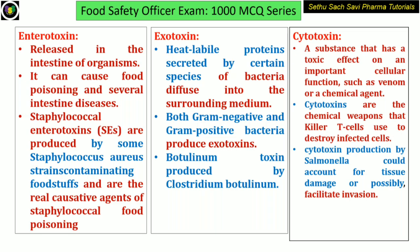Let us see the different types of toxins. First one is enterotoxin, next is exotoxin, and the third one is cytotoxin. Enterotoxin means it is released in the intestine of the organism. This is the main cause of food poisoning and intestinal diseases. Staphylococcal enterotoxins are one of the most causative agents of food poisoning — here it is an enterotoxin.